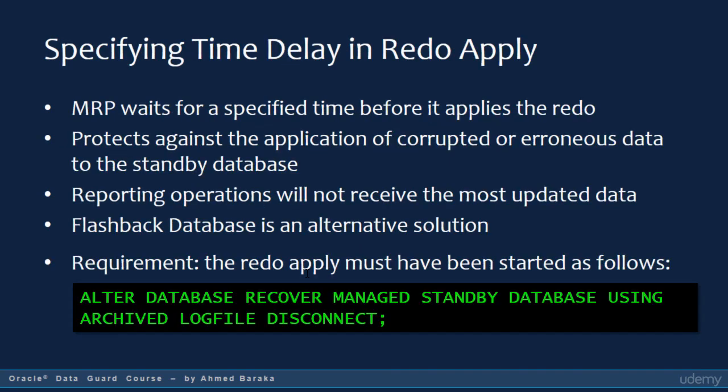We have seen examples of how to set a delay in Redo Apply services. When you set it, the MRP process waits for the specified time before applying the Redo. This can be useful to protect against the application of corrupted or erroneous data to the standby database. However, reporting operations on the standby database will not be based on the most up-to-date data. A better solution than using the delay feature is the Flashback Database, which allows you to restore to a failure point in time without sacrificing up-to-date data on the standby side.